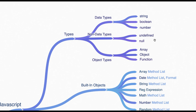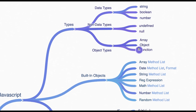Data types — we have string, boolean, and number as known data types, while undefined and null are also known types. If you do typeof undefined it is 'undefined'; typeof null is 'object'. Then there are object-type data types: array is an object, object itself is an object, and function is an object. If you do typeof Array it's 'object', and typeof a constructor function — all these are first-class functions in JavaScript.